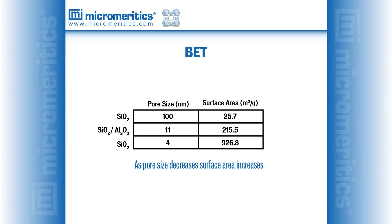We can use the surface area and pore size results to observe a significant trend. As pore size decreases, surface area increases. This tends to be a good rule of thumb for materials with similar chemical composition.